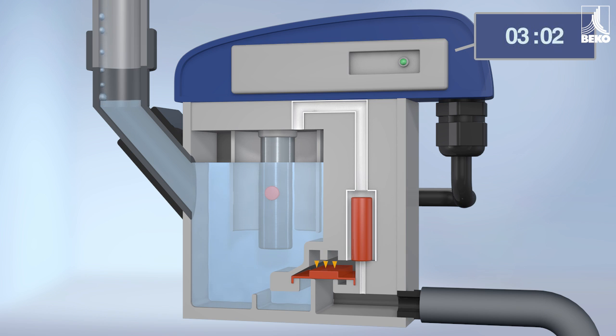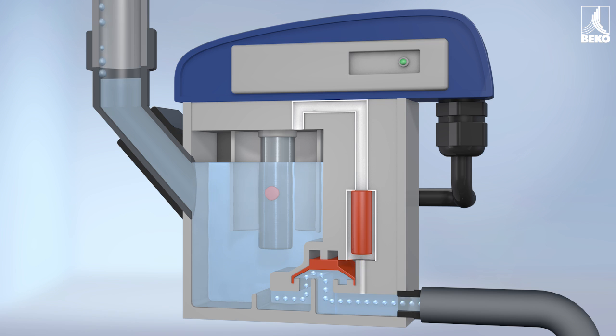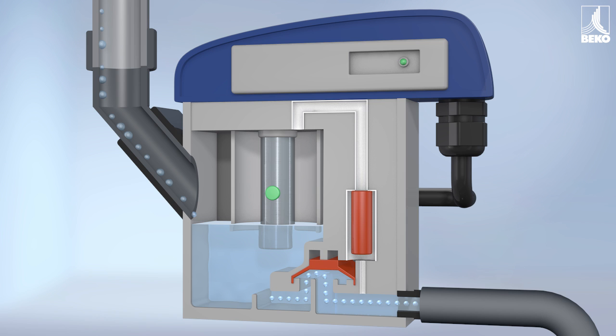When the countdown ends, the electronic monitoring unit activates the solenoid valve, allowing venting of the space above the membrane. The closing force decreases and the membrane is pushed up by the pressure from below. Condensate can now flow freely into the outlet line.